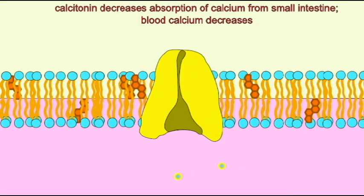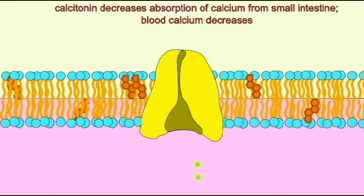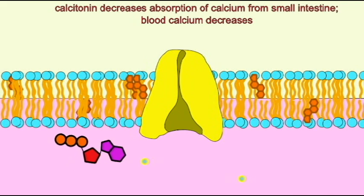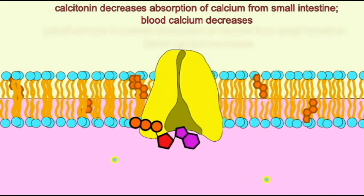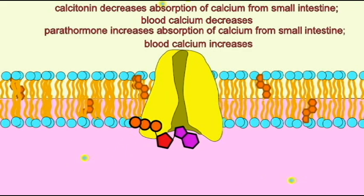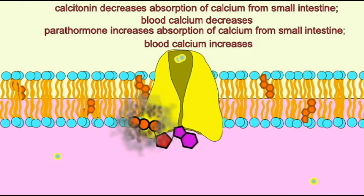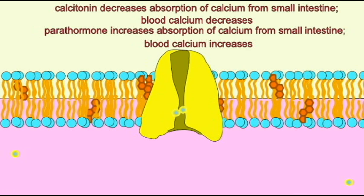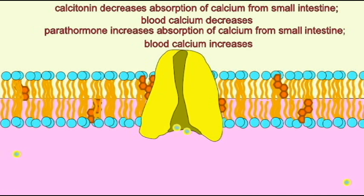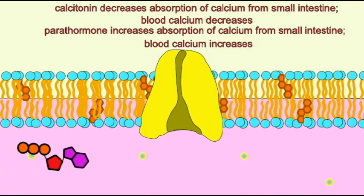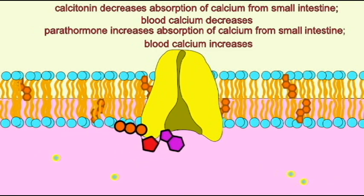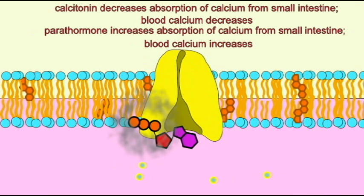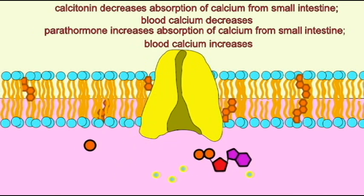Calcitonin and parathormone can also alter the activity of the pumps of the small intestine which absorb calcium from our diet. Calcitonin decreases blood calcium levels and decreases the activity of the pumps which would absorb calcium from our food. Parathormone increases blood calcium levels in part by increasing how much calcium is reabsorbed across our small intestine from the food we eat.